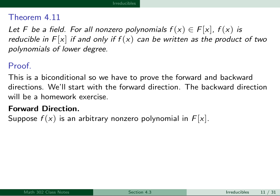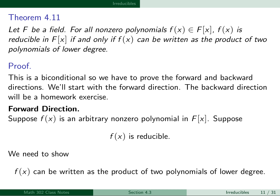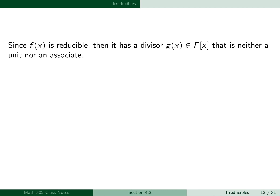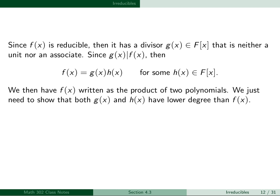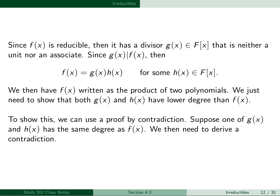To prove the forward direction, suppose f(x) is an arbitrary non-zero polynomial in F[x] and suppose f(x) is reducible. We need to show that f(x) can be written as the product of two polynomials of lower degree. Since f(x) is reducible, it has a divisor g(x) in F[x] that is neither a unit nor an associate. Since g(x) divides f(x), then f(x) equals g(x) times h(x) for some h(x) in F[x]. We just need to show that both g(x) and h(x) have lower degree than f(x), and we use a proof by contradiction.